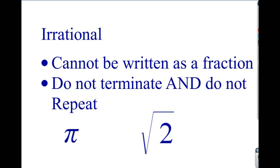And then we have irrational numbers. These are numbers that cannot be written as a fraction. They do not terminate, and they do not repeat. We talked about these as being sort of insane, crazy numbers — we never know what they're going to do next. They don't follow a pattern; they don't follow the rules. This is why we talk about them being irrational. I put a couple of examples here: pi, which is a never-repeating, never-terminating number, and the square root of two.